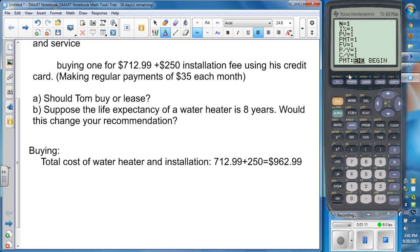We can use our TI-83 to actually figure this out. If you go into your apps, go into finance, go into this TVM solver. We need to figure out the number of payments, how long it's going to take him to pay this thing off first of all. So the present value is $962.99. His payment is $35. His future value, well he wants to pay it off, right? So that's going to be zero.